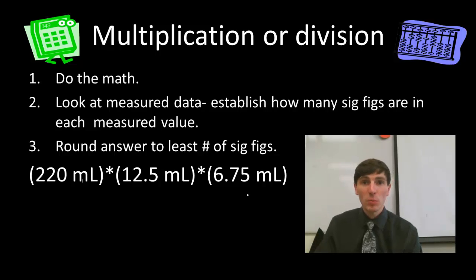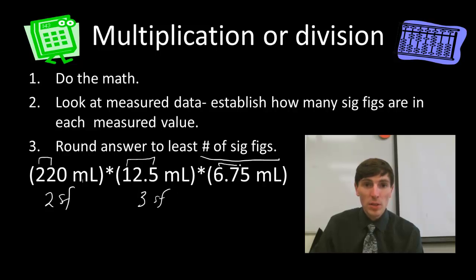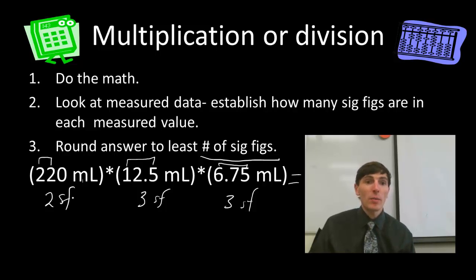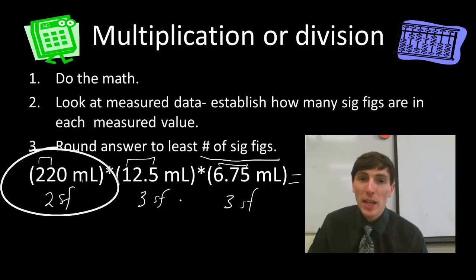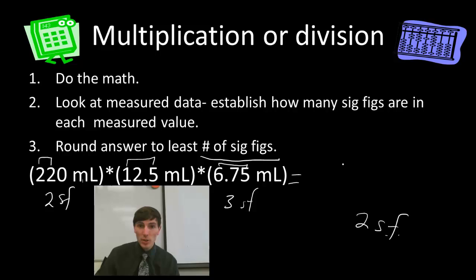Multiplication and division has nothing to do with decimal place or least precise measurement — it always deals with the number of sig figs. Looking at the first number with no decimal, I make a number sandwich and get two sig figs. The second number has a decimal, first number to the end: three sig figs. The third also has three sig figs. So my worst instrument measured only two sig figs, meaning my final answer must also have two sig figs. My calculator gives 18,562.5.